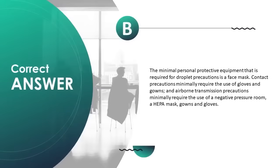The minimum PPE required for droplet precautions is a face mask. Contact precautions minimally require gloves and gowns. Airborne transmission precautions minimally require a negative pressure room, a HEPA mask, gowns, and gloves.